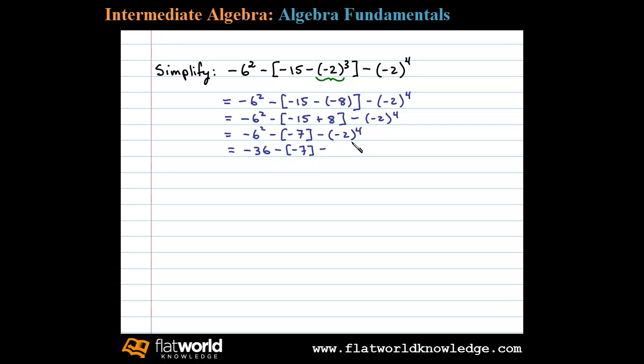At this point we'll replace the sequential negatives with addition, so we have negative 36 plus 7 minus 16. Working addition and subtraction from left to right, negative 36 plus 7 is negative 29.